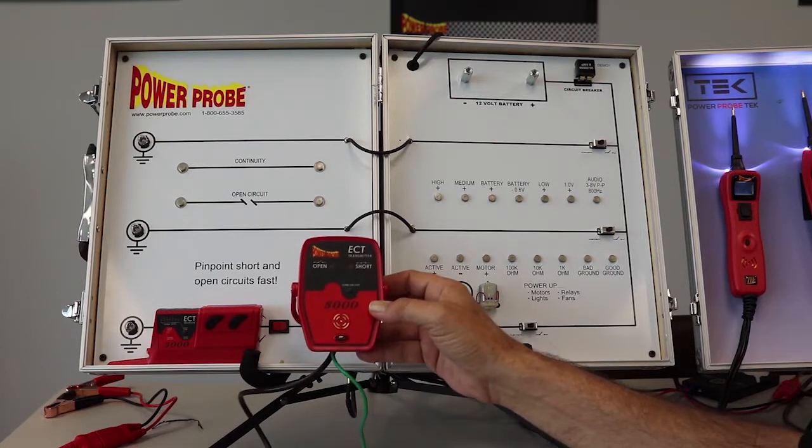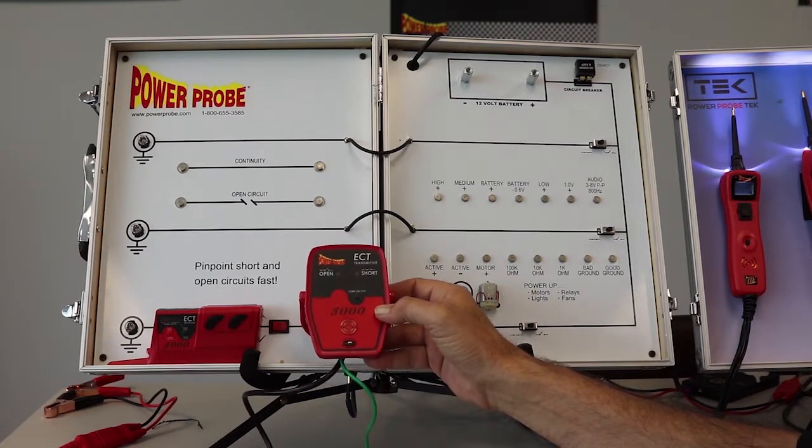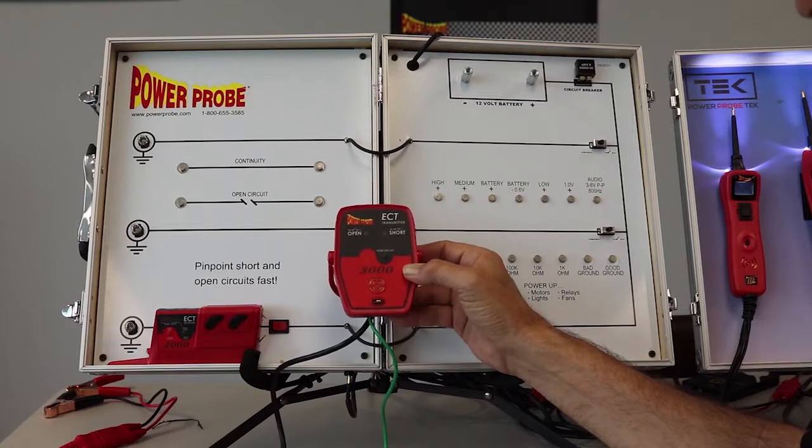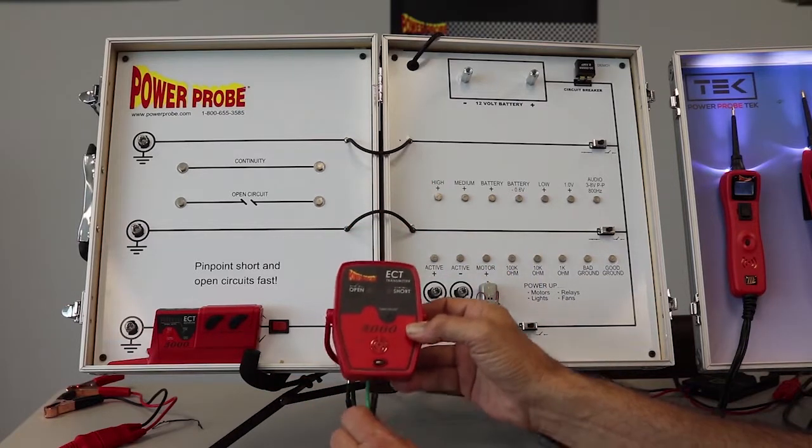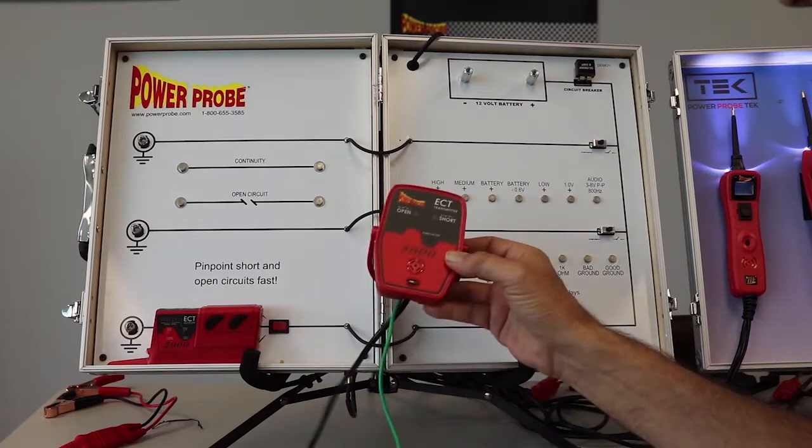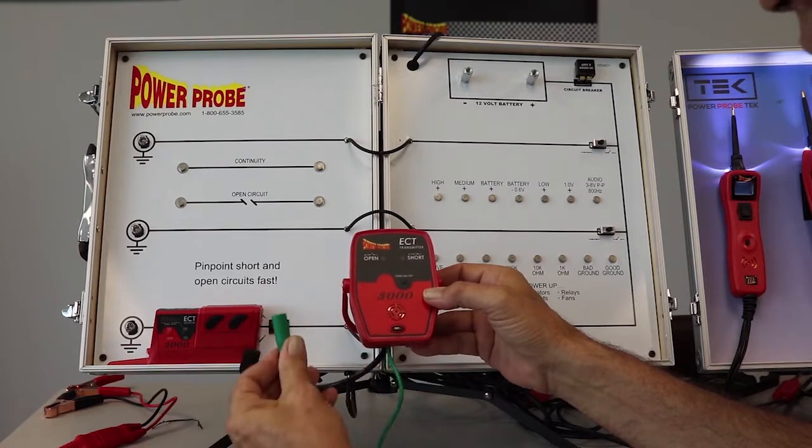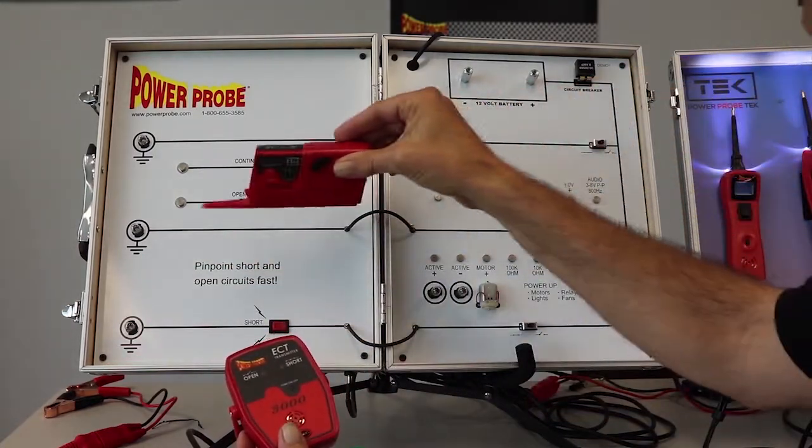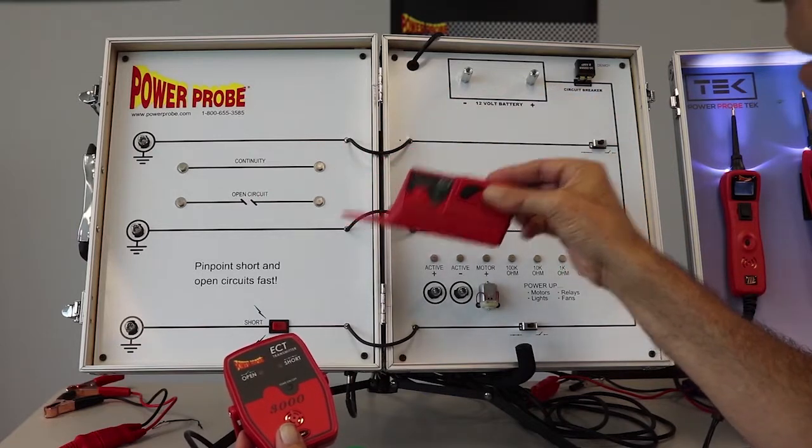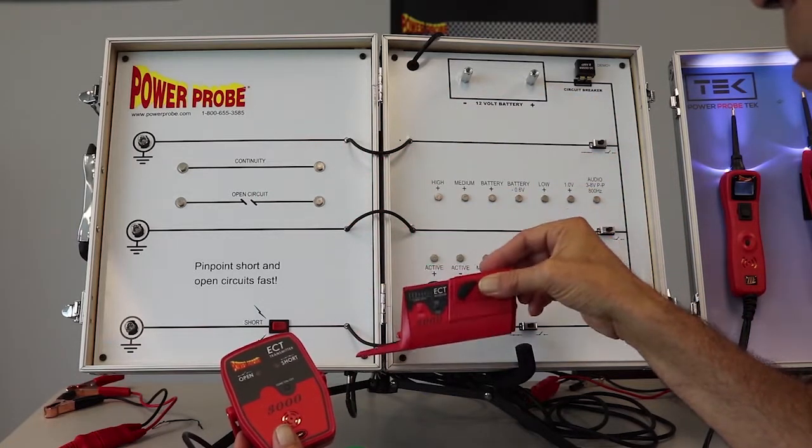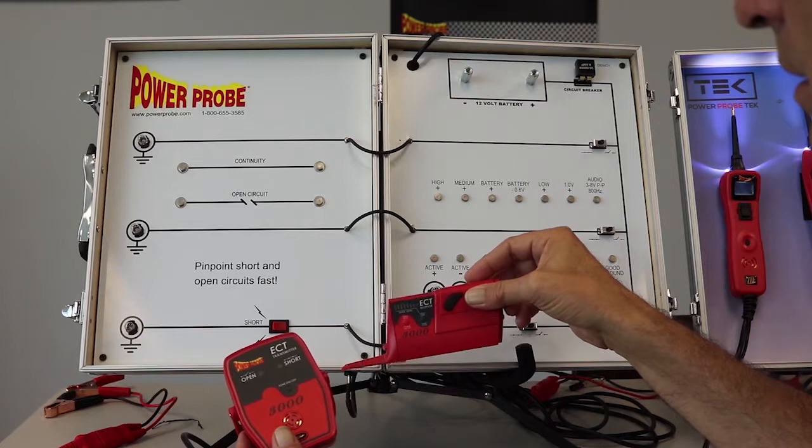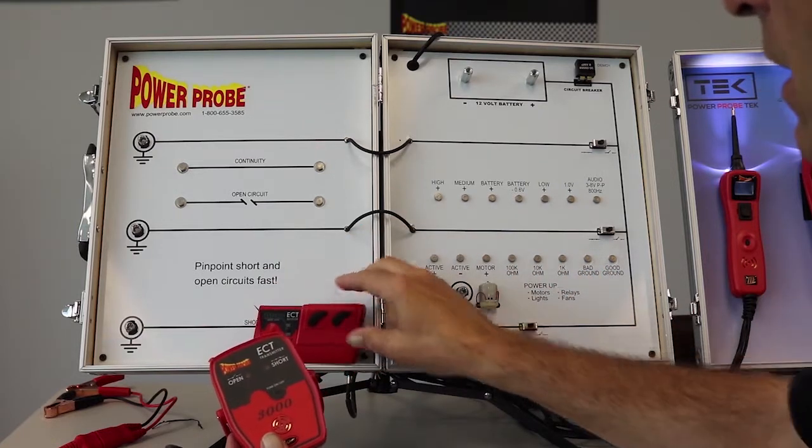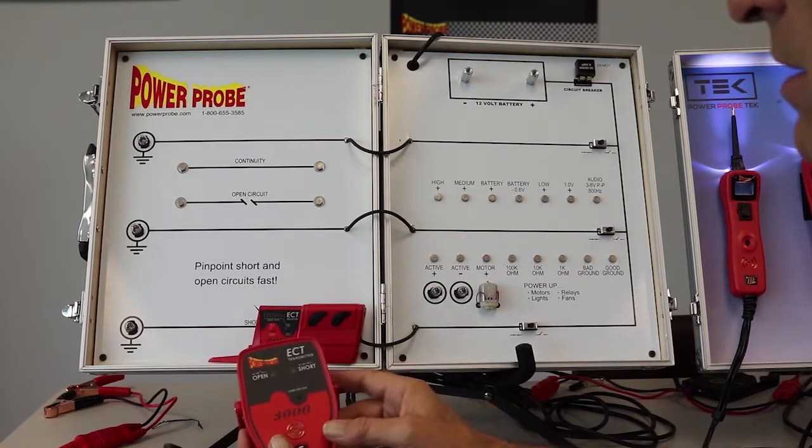Pretty simple concept. It utilizes this transmitter, powered by the vehicle's battery. This will put a signal into the circuit. You will track that signal with this receiver and at some point you lose the signal is generally where your short or your broken wire is. So let's get this set up on this board and we'll show you how it actually runs.